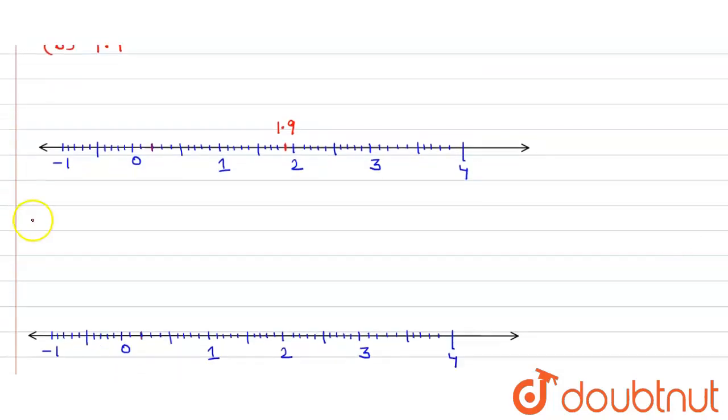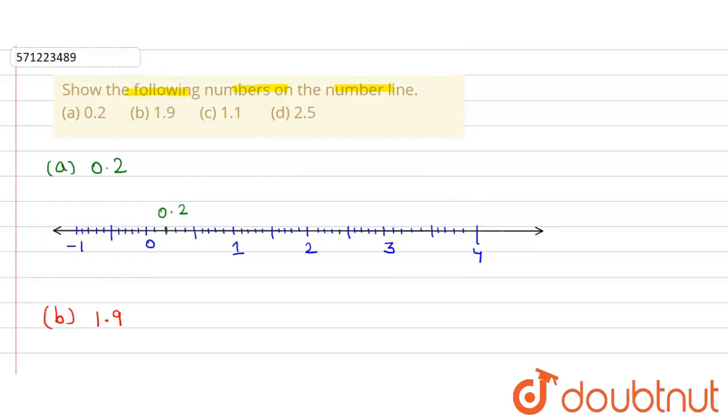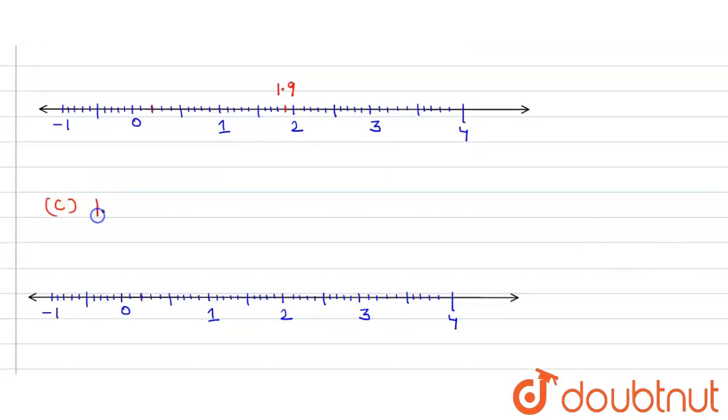Similarly, the third number we have to represent on the number line is 1.1. Again, this number will be between 1 and 2. Here it will be 1 and then 1.1.